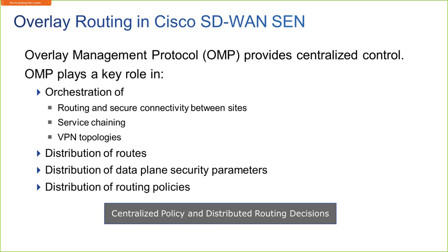As soon as those DTLS connections come up to the V-Smart devices, those OMP peerings are going to take place automatically. The peerings are actually formed between the system IP addresses of the two different devices. The protocol is responsible for advertising service-side prefixes — the LAN side, not the SD-WAN fabric side — those prefixes that get associated to the various VPNs. It's going to be responsible for identifying data plane security parameters, overlay routing policies, and transport network location mappings. It does a lot more than what your traditional routing protocol does.